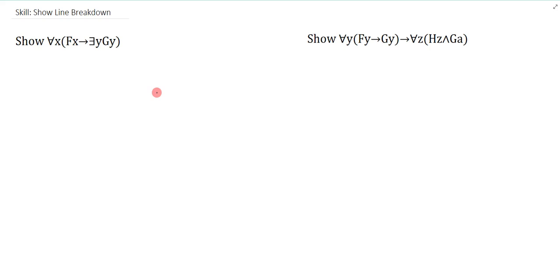And that impacts our show line breakdown. Because if we want to show a universal claim, it suffices just to show an instantiation of that claim where that instantiation is arbitrary. Now in our system, we're going to generate that arbitrariness by using the exact same variable letter as what is captured in my quantifier. Now if this sounds complicated, it actually plays out in a very simple way.